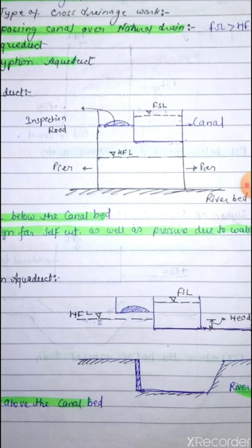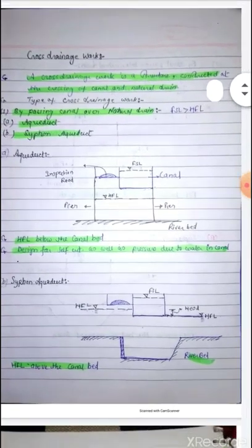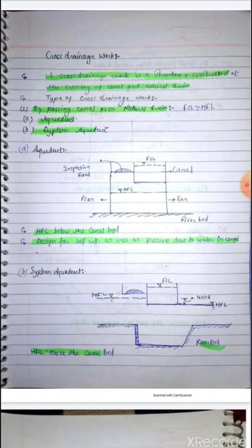There are two important terms we have to understand: HFL and FSL. HFL is high flood level, associated with the natural drain and the river. FSL is full supply level, associated with the canal.